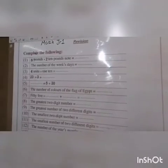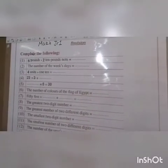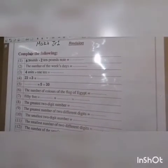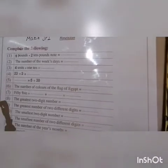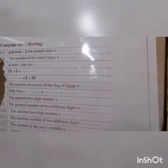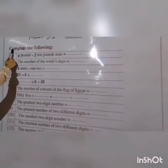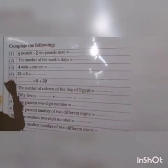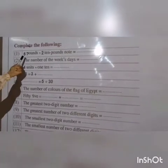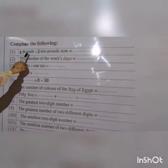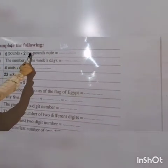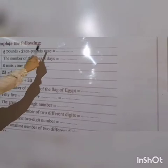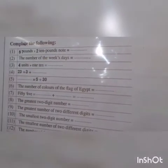Good morning, Junior One. Today we are going to review something. Let's start. Complete the following. Number one: five bouts and two ten bouts.